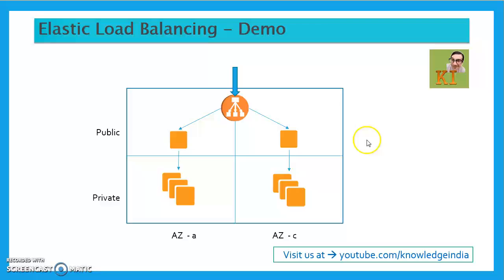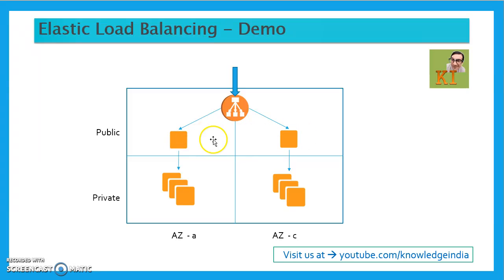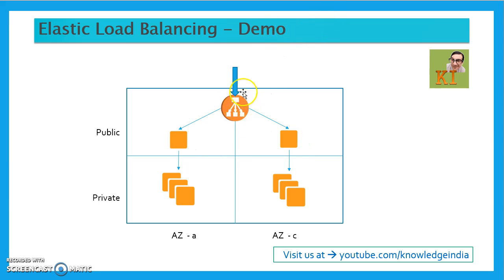In the next few minutes we will create an ELB from scratch. There will be a VPC with four subnets — two public and two private — spread across two availability zones, A and C. We will launch the ELB in the two public subnets. We will keep our web servers in the private subnets in AZ-A and AZ-C, register those instances to the ELB, and then hit the public DNS of the ELB to verify the traffic flows through.